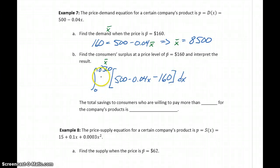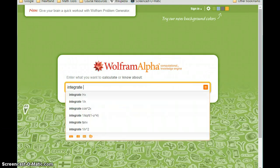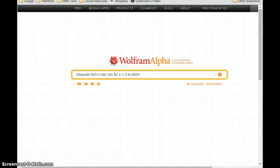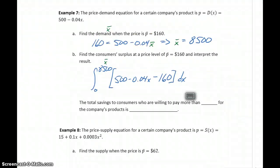So integrating this function over this interval from 0 to 8,500 will give us the consumer surplus. So we can integrate 500 minus 0.04x minus 1.60 for x equals 0 to 8,500. And we get a result of $1,445,000. So what this means is the total savings to consumers who are willing to pay more than the current asking price, which is that $160, for the company's products, is the $1,445,000.